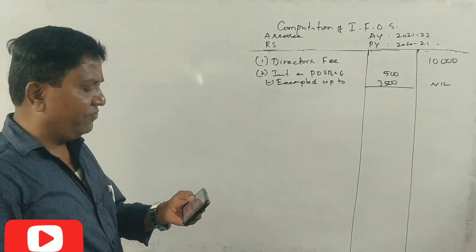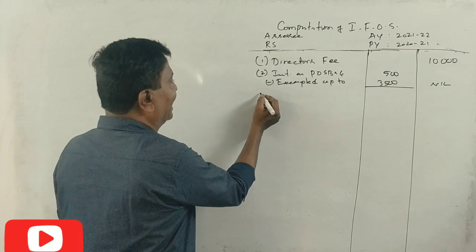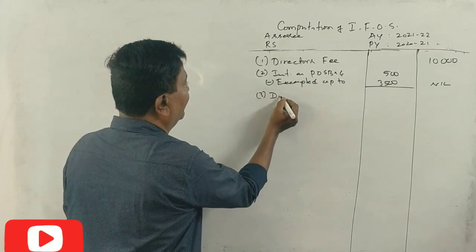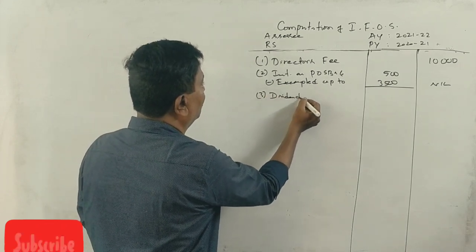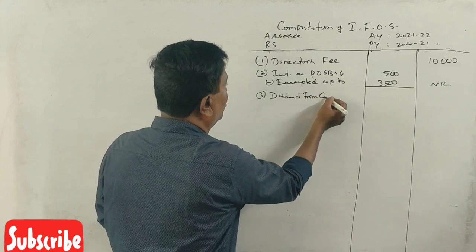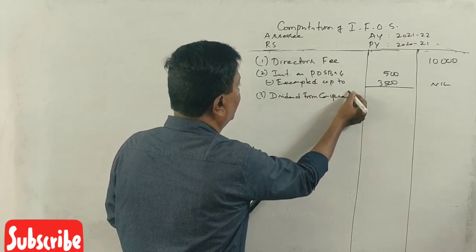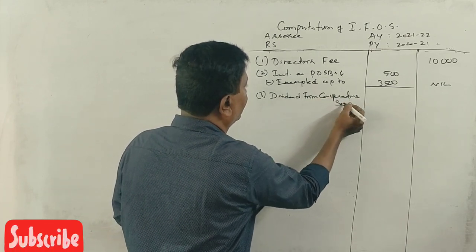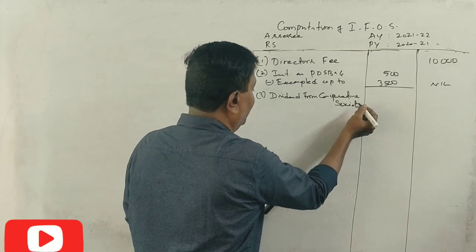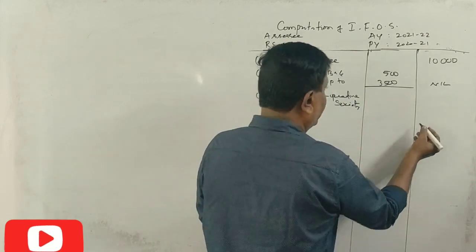Dividend received from co-operative society, fully taxable. Correct? Dividend from co-operative society, the amount taxable is 9,000.